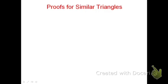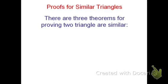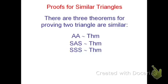In this video, we'll review the proofs for similar triangles. There are three theorems that we can use for proving that two triangles are similar. The first is AA similarity theorem, the second is SAS similarity theorem, and the third is SSS similarity theorem. These are the three that we'll review for this video.